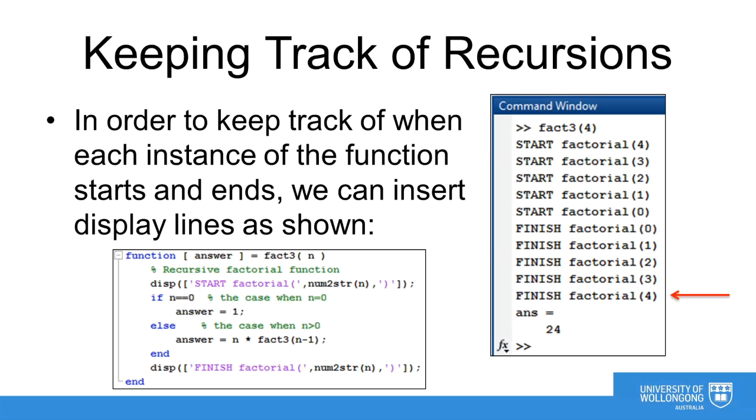However, it is not until the very end that we see the corresponding finished line for n equals 4. In fact, during the intervening time we have started and finished every other call of the function for every other value of n. We can see that each successive call to the factorial function reduces n by 1 until we get to the n equals 0 call.